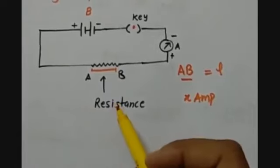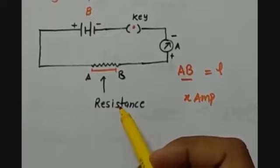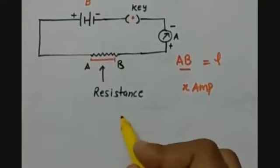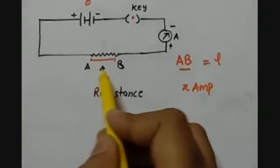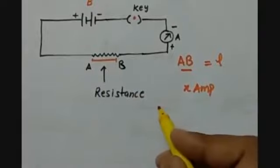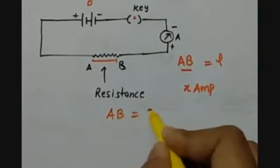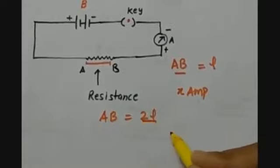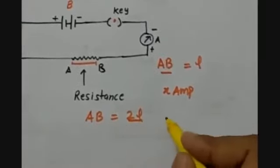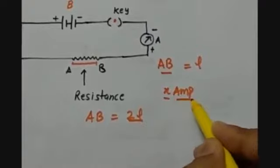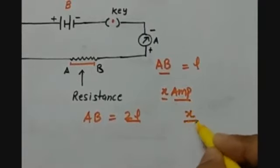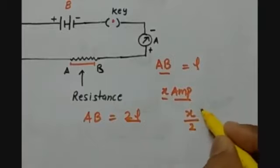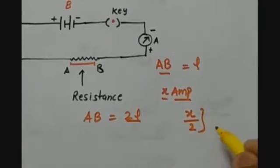Although we should perform an activity on the basis of this, hopefully we will be doing this when we are in school. Then we have to change the length of the conductor — let us double the length. So now AB is 2L. When we take a length 2L, the current which was X ampere earlier will now decrease by half.